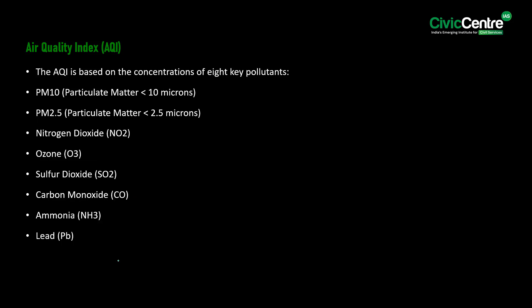The Air Quality Index is based on the concentrations of eight key pollutants: PM10, PM2.5, nitrogen dioxide, ozone, sulfur dioxide, carbon monoxide, ammonia, and lead. Each pollutant's concentration is converted into a numerical scalar that reflects its health impact, and the pollutant with the highest score determines the overall AQI for that location.